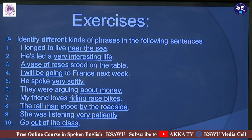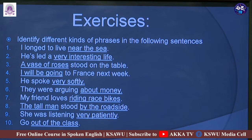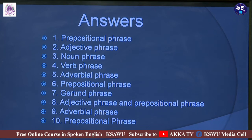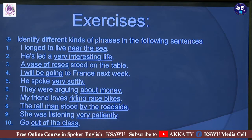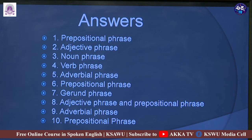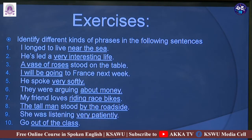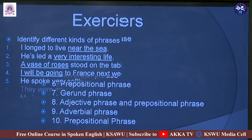Now let us look at the answers — see how many of you scored 11 out of 11, since there are 11 phrases across 10 sentences. Answer one: 'near the sea' is a prepositional phrase. Answer two: 'very interesting life' is an adjective phrase. Answer three: 'a vase of roses' is a noun phrase. Answer four: 'I will be going' is a verb phrase. Answer five: 'very softly' is an adverbial phrase.